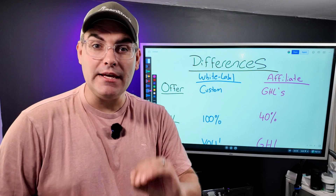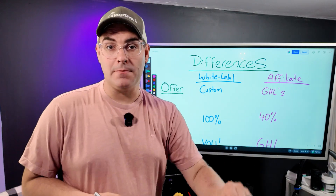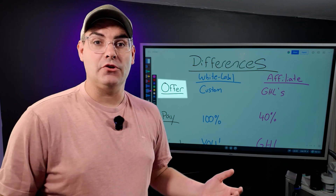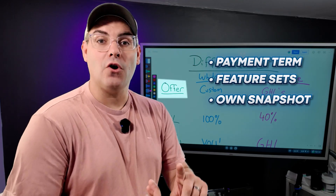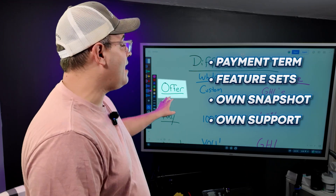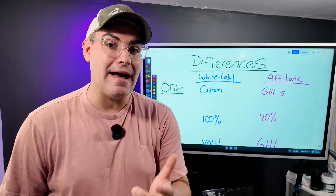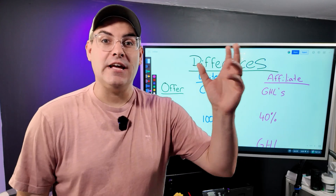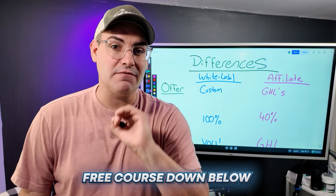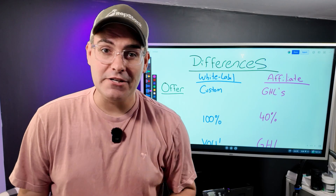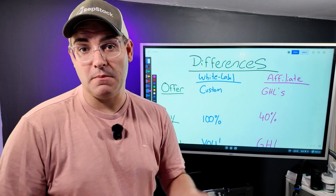There are a few key differences in selling HighLevel as an affiliate versus as your own white label. Number one: when you're doing the offer as a white label, you can create a complete custom offer — you can have your own payment terms, your own feature sets, your own snapshot, your own support, and basically do all your extra bonuses. You have complete and custom control over your offer. As an affiliate, you can differentiate a little bit by adding bonuses, but you can't take anything away or change any of the payment terms with HighLevel's offer.